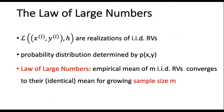The approximation of risk by the empirical mean can be analyzed rigorously using probability theory. One key result is the law of large numbers, which states that under mild conditions the empirical mean of IID random variables converges to the mean of these random variables. We can apply this in our setting since the loss incurred by a given hypothesis h is a realization of a random variable under our IID assumption. For a given loss function and hypothesis h, the probability distribution of this random variable is fully determined by the distribution p(x, y) of the data points.